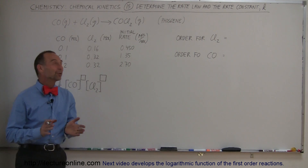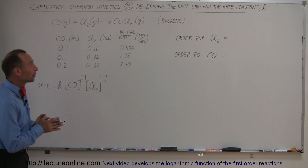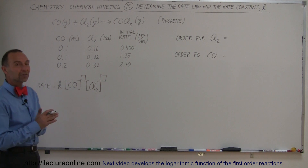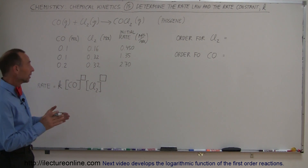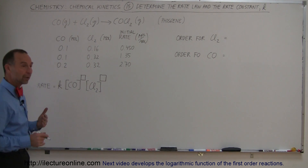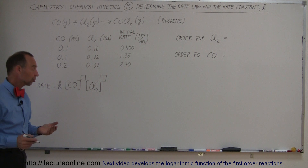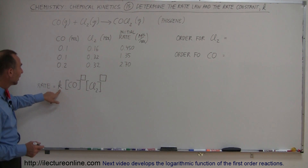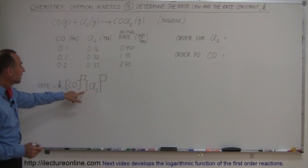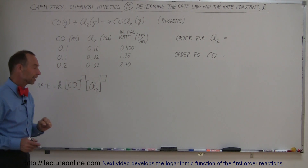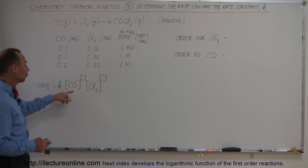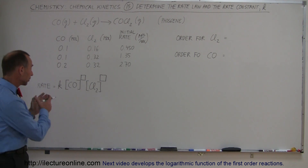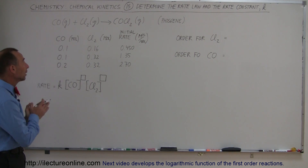Welcome to Electron Online. We're going to determine the rate law as well as the rate constant k. The rate law is written right here — it's simply a relationship that shows the rate of a reaction as a function of the rate constant and the concentrations of the reactants. We need to know the orders of the concentrations of the reactants in order to come up with the rate law.